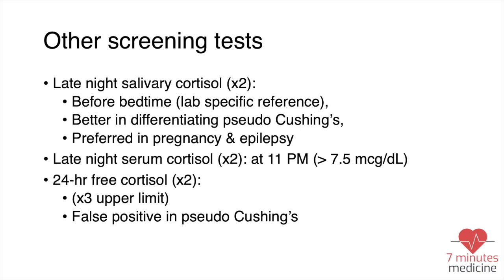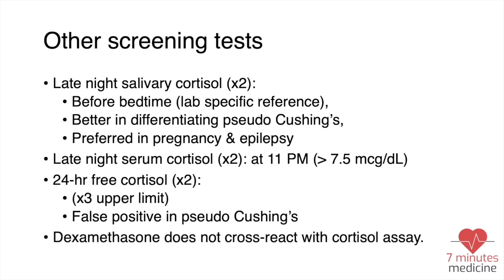The 24-hour urine free cortisol is a well-known urine test; the threshold should be three times the upper limit of normal. A false positive can occur in pseudo-Cushing syndrome, so it is not ideal for differentiating pseudo-Cushing — late-night salivary cortisol is much better for that purpose. Importantly, dexamethasone does not cross-react with the cortisol assay — a common board exam question — so dexamethasone does not affect the cortisol measurement.